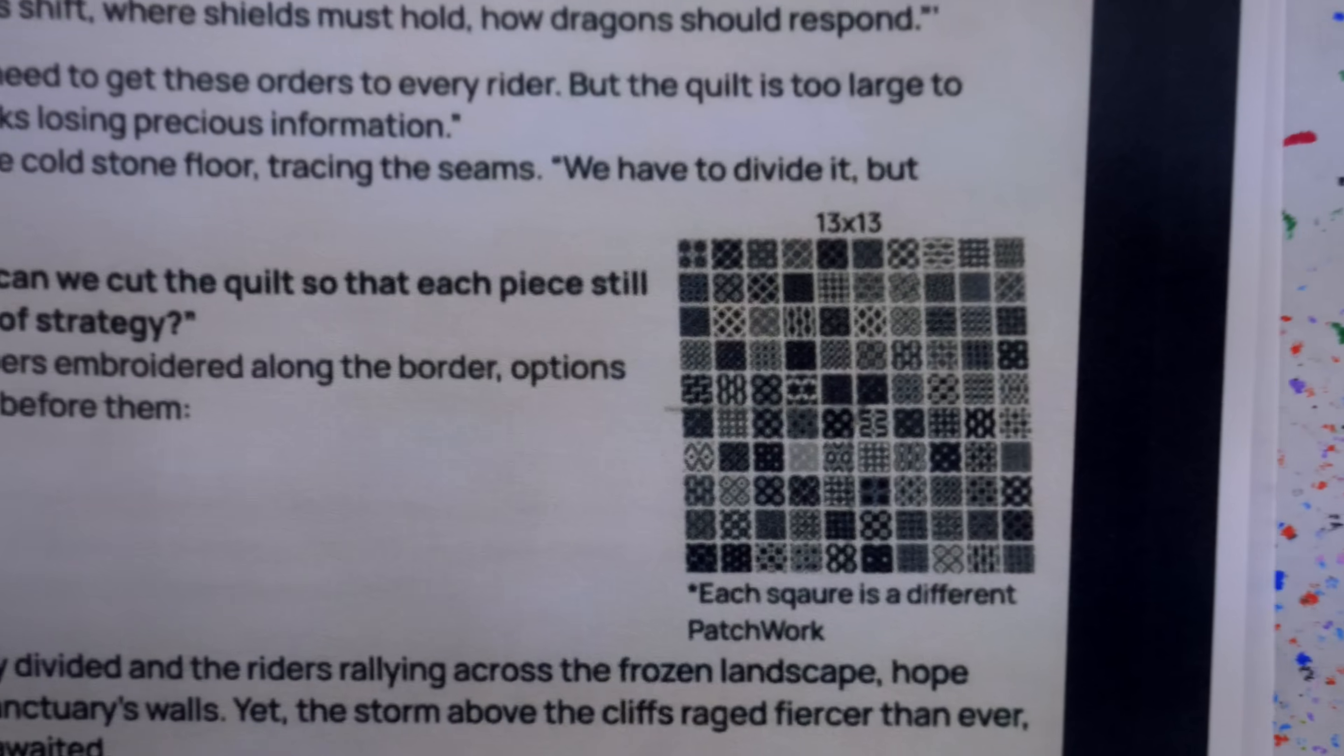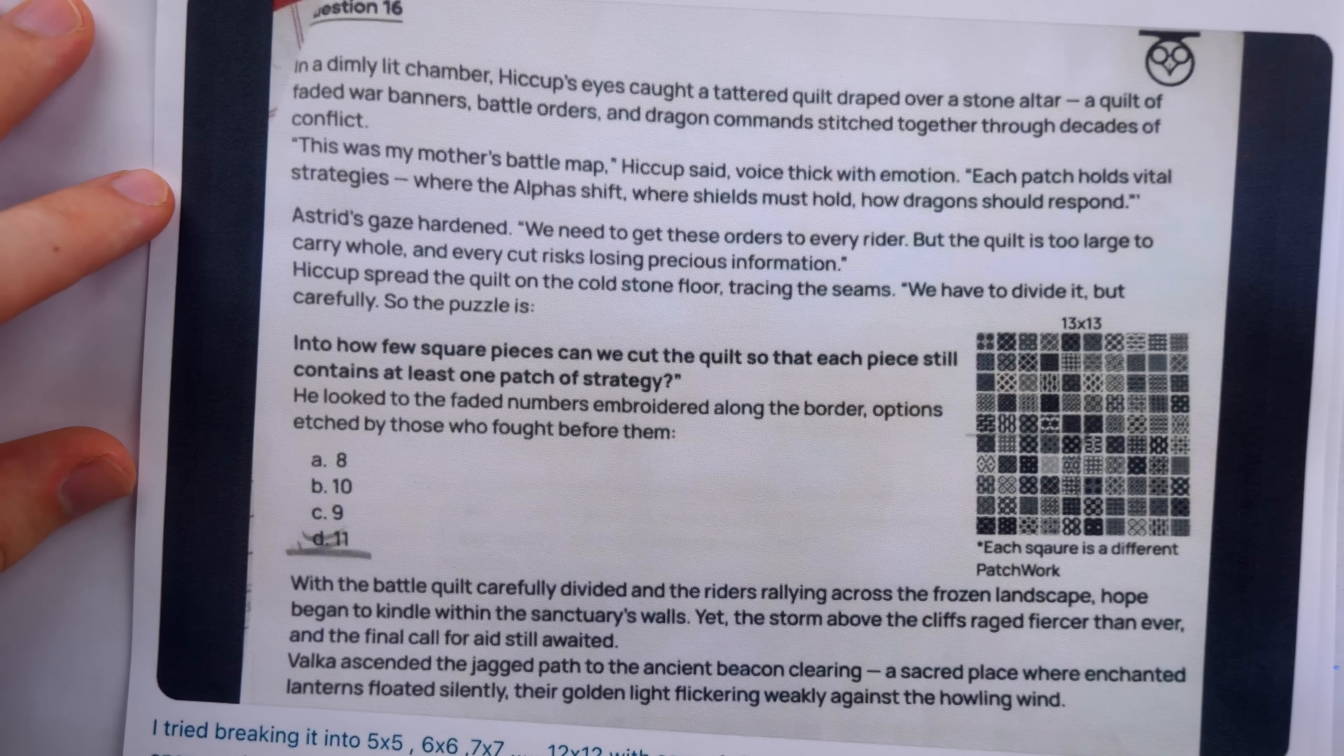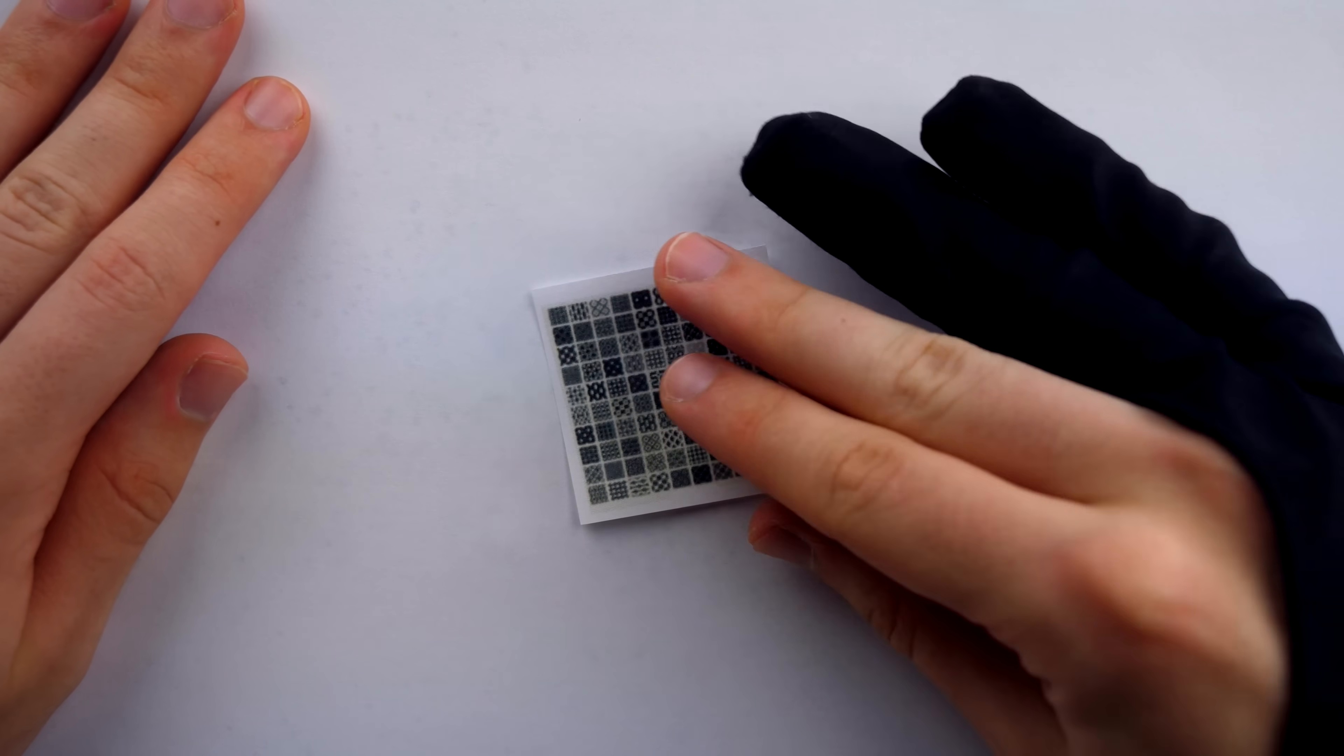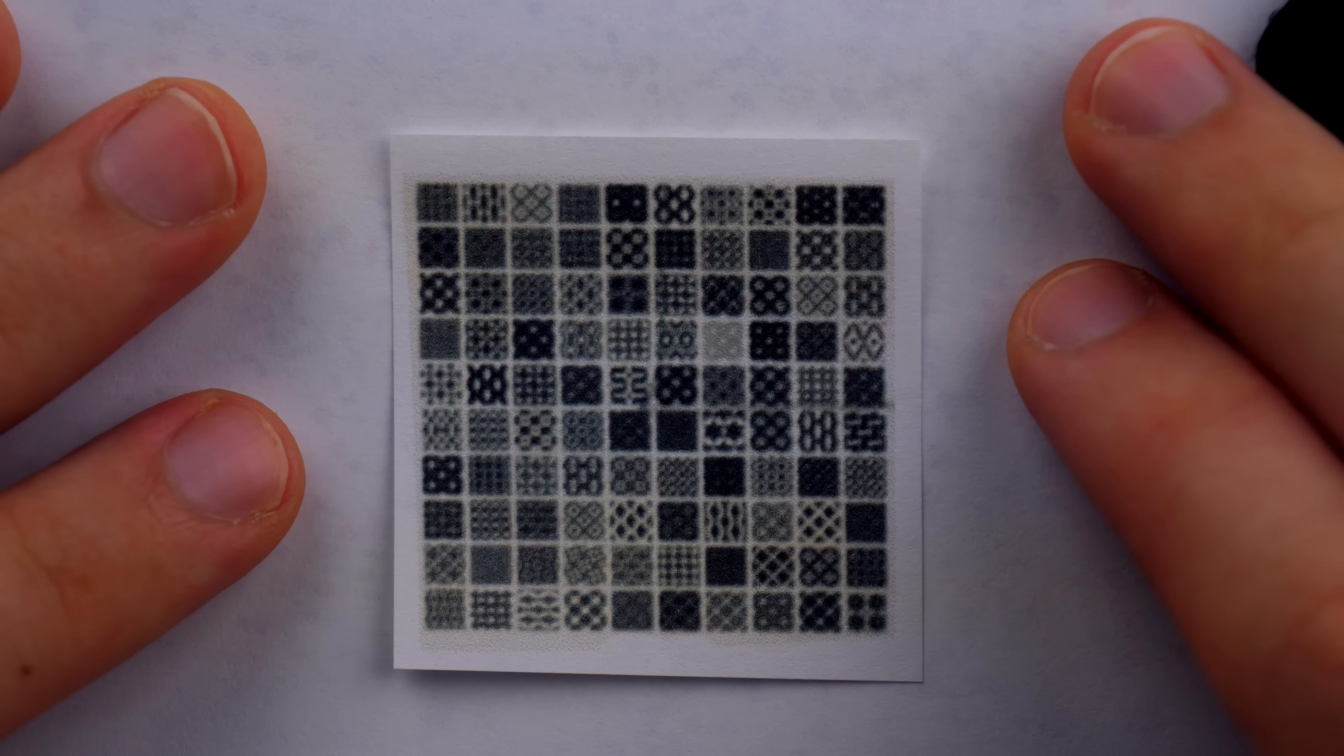First possible answer, here's the quilt. The problem says we want it in as few square pieces as possible, so then the obvious answer is just don't cut it, leave it in one single square piece, and we're done.